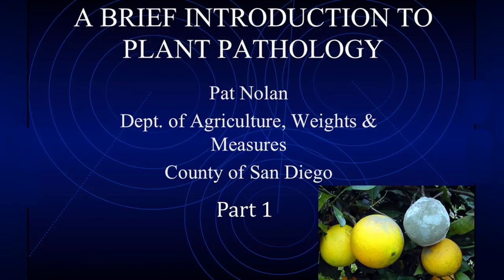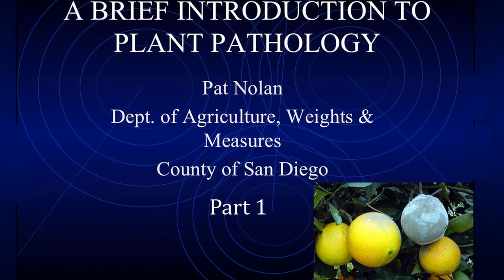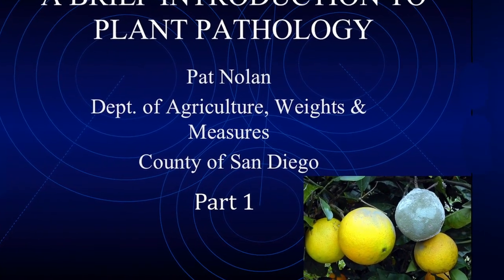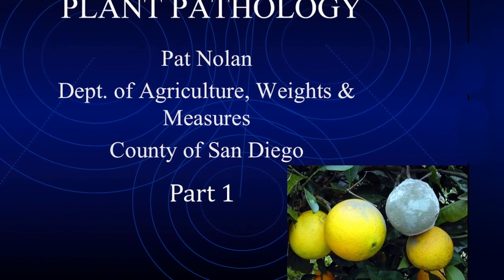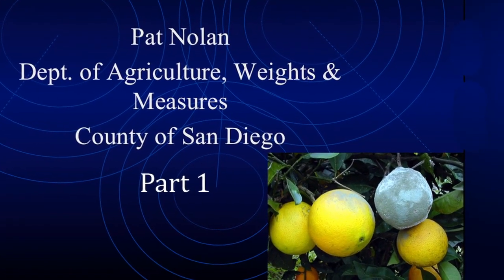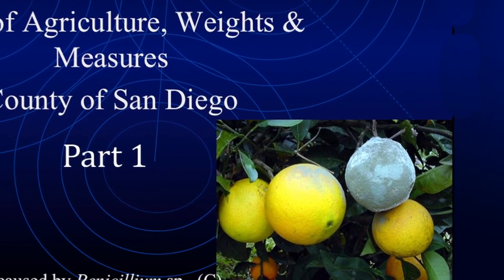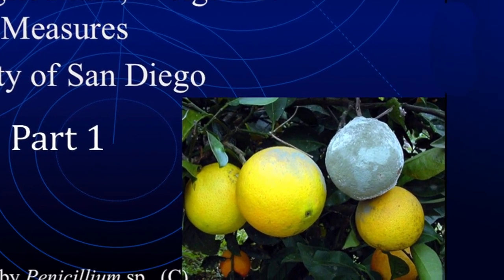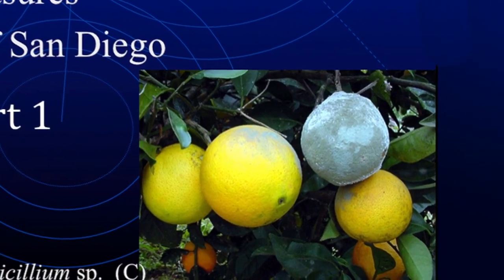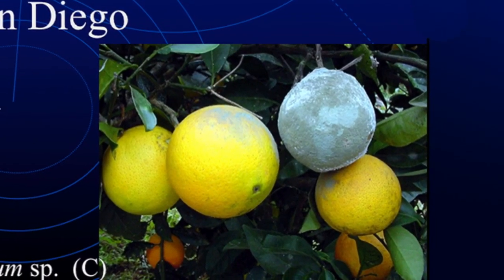I've thrown in a lot of little extra pictures along here. That one is blue mold on citrus — you've probably all seen a moldy orange or two. That is a disease that they work really, really hard to control in the packing houses with chlorine in the water and everything, so that when the fruit gets to you, it's clean and it lasts well.